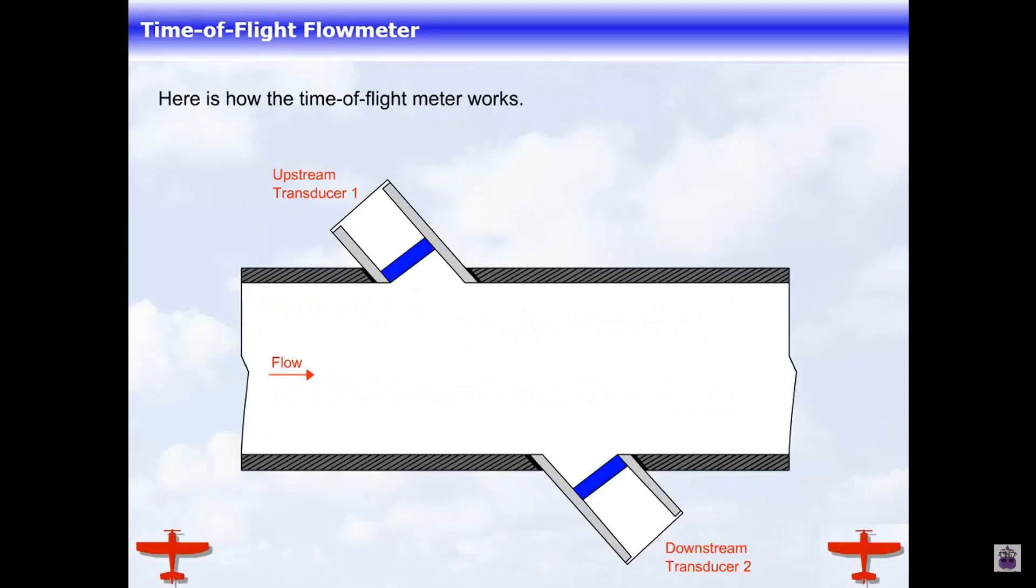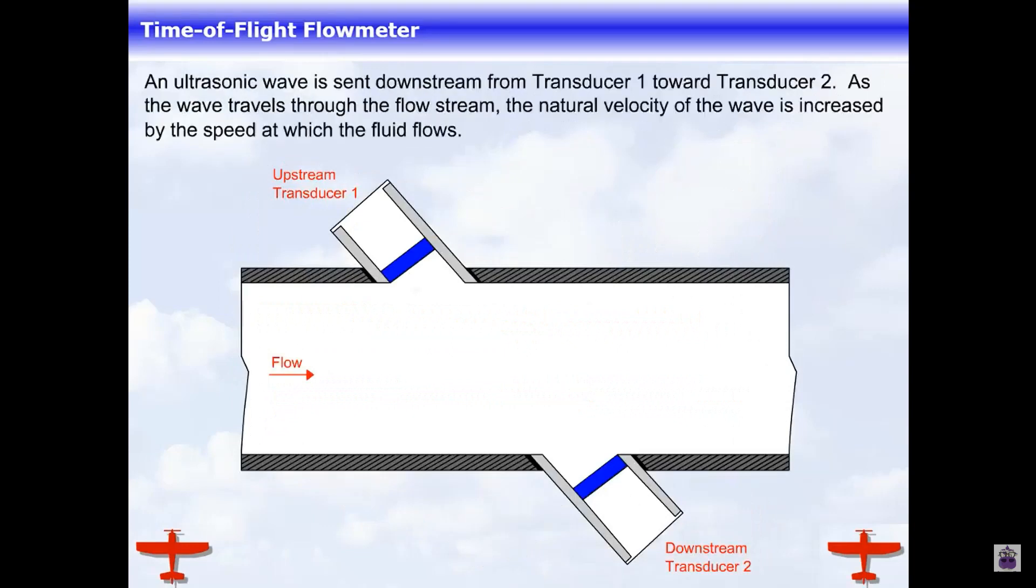Here is how the time-of-flight meter works. An ultrasonic wave is sent downstream from transducer 1 toward transducer 2. As the wave travels through the flow stream,